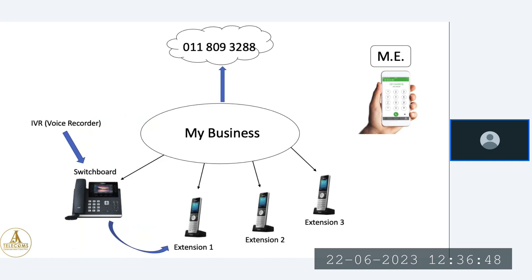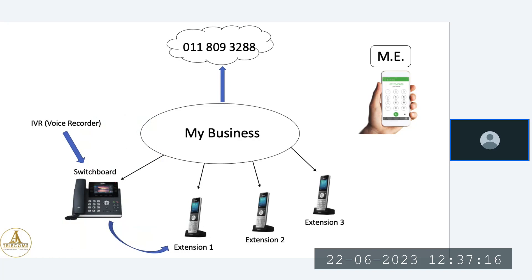Let's say John is working from home and needs to make an important business call to postpone a meeting. John can simply open up the AJ Telecoms mobile app, and when he calls his client, the client will see the landline number calling them. If the client calls back, it will not go to John's cell phone but will divert back to the main switchboard. There is an additional webinar that will explain this entire process in more detail.